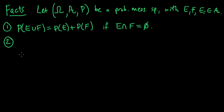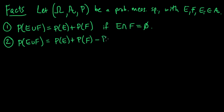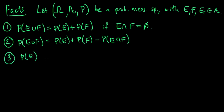Fact two: in general, the probability of E union F equals the probability of E plus the probability of F minus the probability of E intersect F. Fact three: the probability of E equals one minus the probability of its complement.